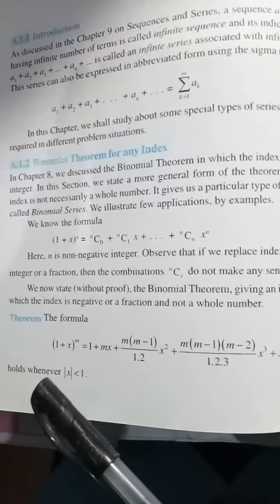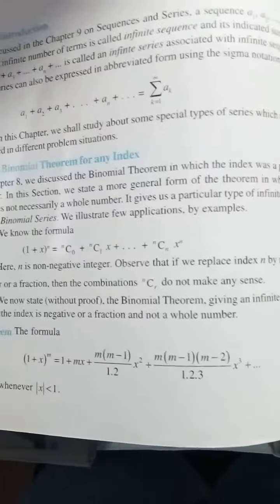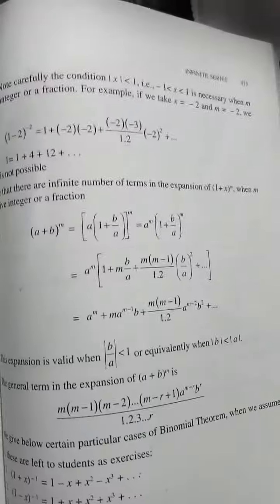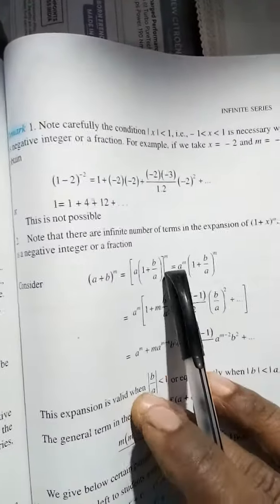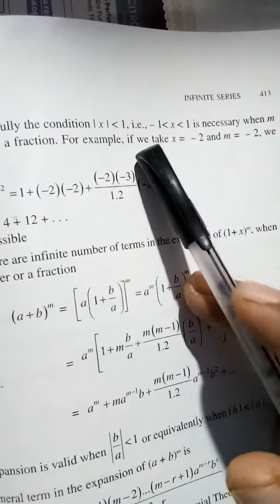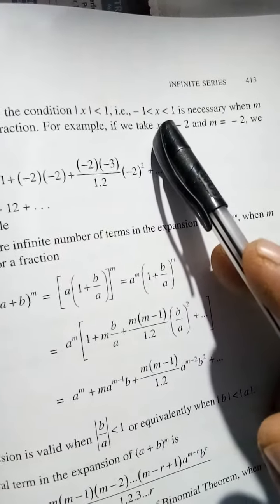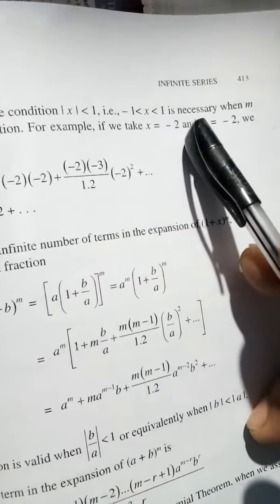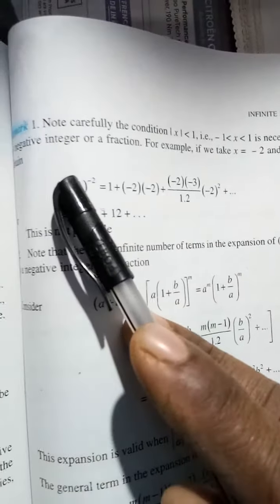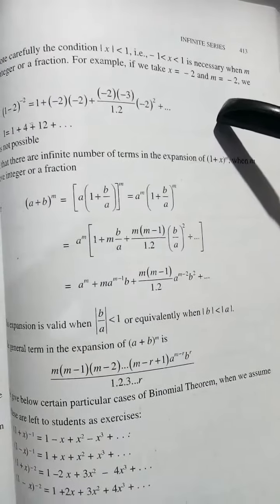As you see, this holds whenever |x| < 1. Remark: Note carefully the condition |x| < 1, i.e., -1 < x < 1, is necessary when m is a negative integer. For example, if we take x = -2...